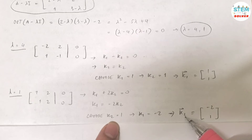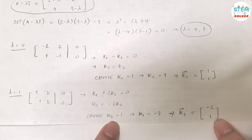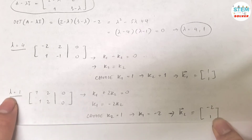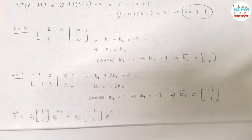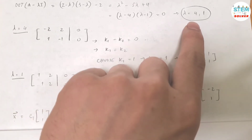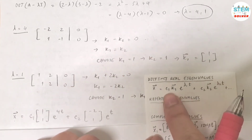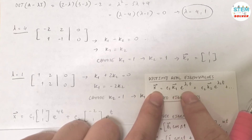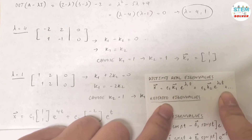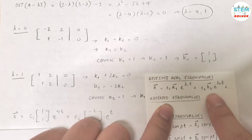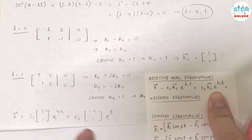So the eigenvector k2 is equal to [negative 2, 1] — the eigenvector for lambda equals 1. Now your final solution will be written in the form for distinct real eigenvalues: x equals C1 k1 e to the lambda1 t plus C2 k2 e to the lambda2 t, and so on depending on how many eigenvalues you have. In this case there are 2, so we have just C1 and C2.